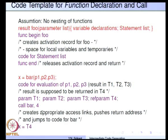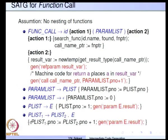This procedure call is supposed to create access links, push the return address, and jump to the code for bar. We will see the details in a future lecture on runtime environments. After the call materializes, t4 will contain the return result, and x = t4 takes care of assigning it to x.